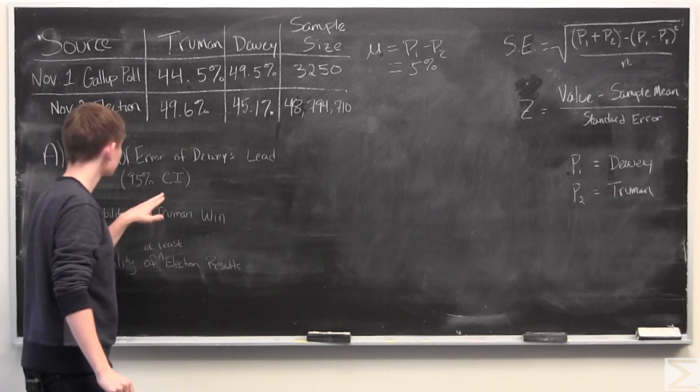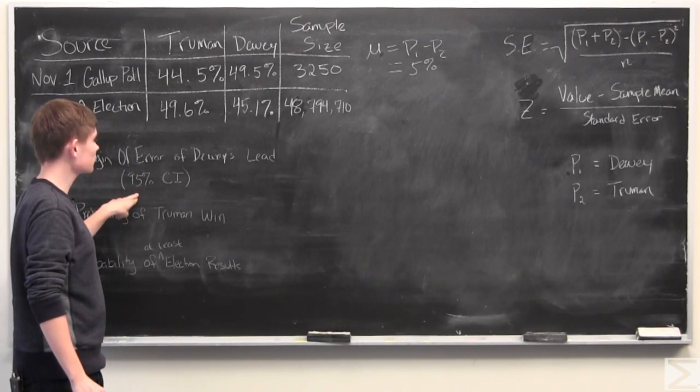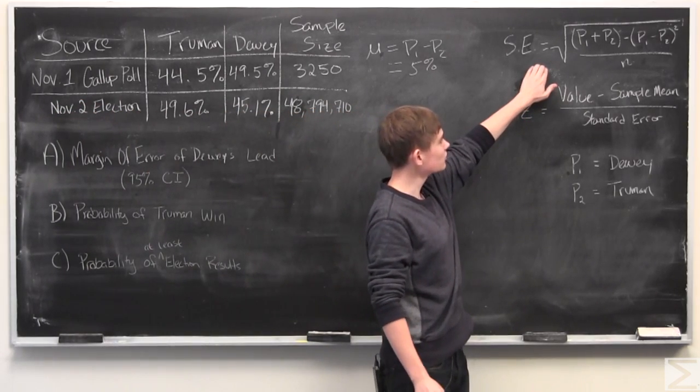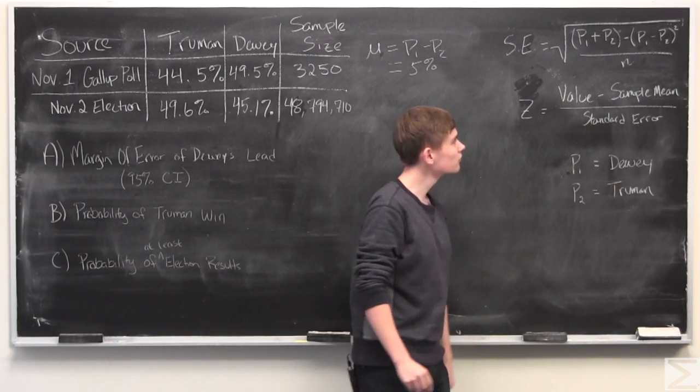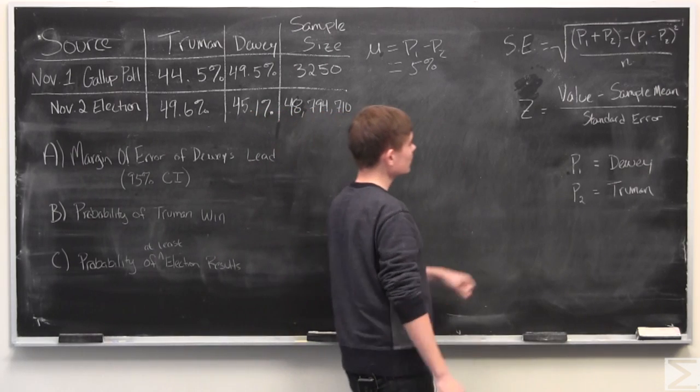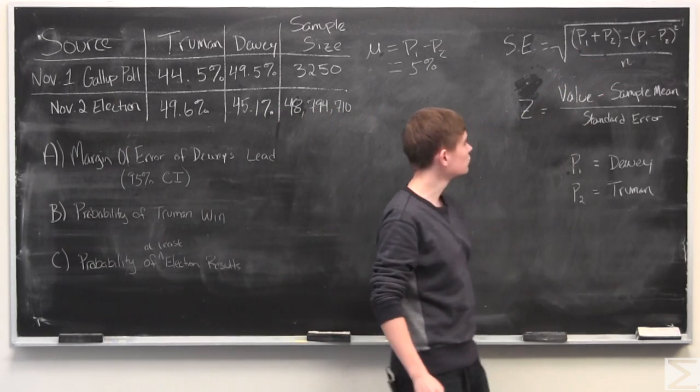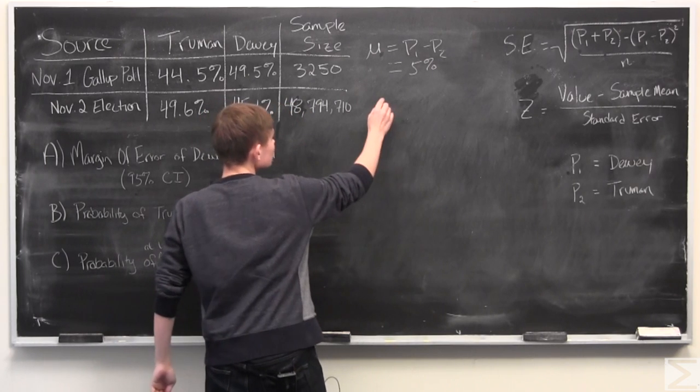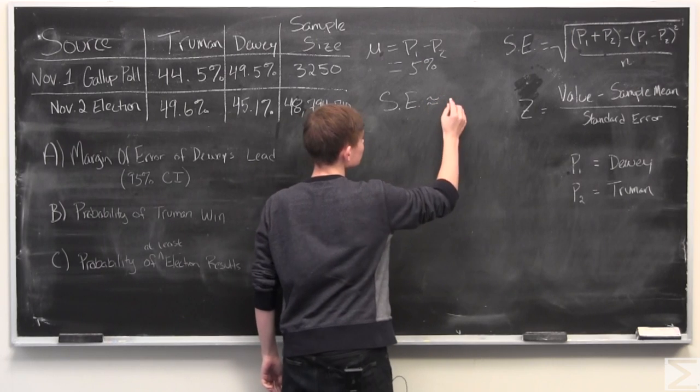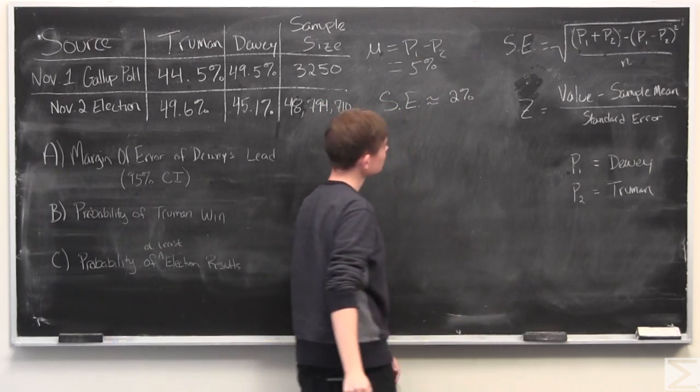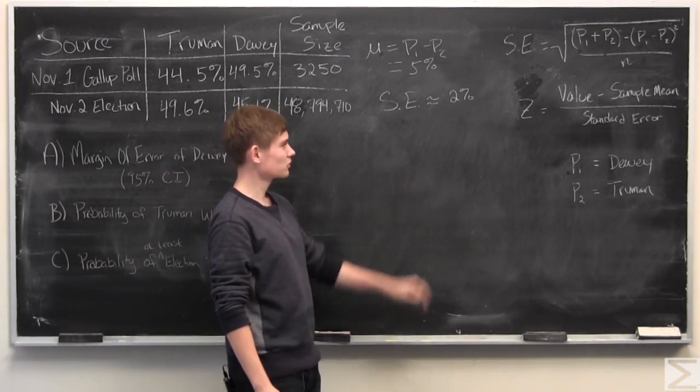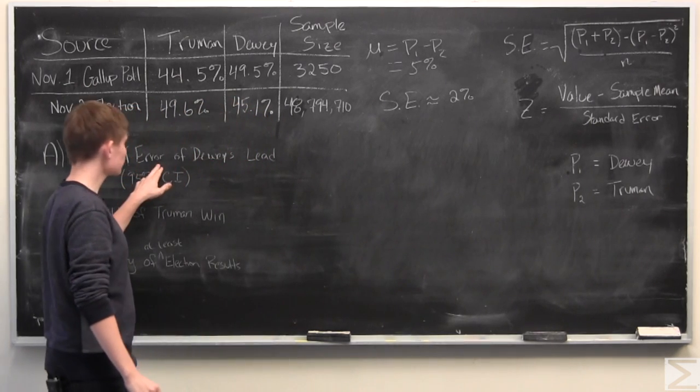So now we have to find the standard error for this polling data. And to do this, we are going to use this convenient formula to find the standard error for a difference in proportions. And when we use this data with Dewey as P1 and Truman as P2, we get a standard error of roughly 2%. I think the actual is 2.004%, but we'll just work with 2%.